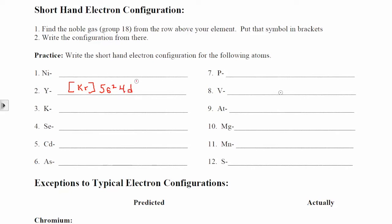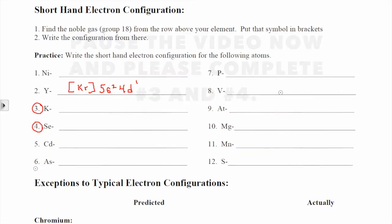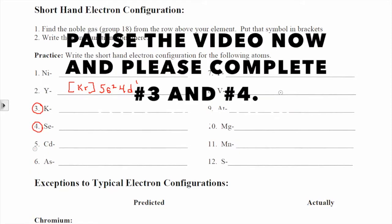Pause this video because I'm going to move on to the exceptions. I want you to write the shorthand electron configuration for potassium and the shorthand electron configuration for selenium (Se). So pause please.